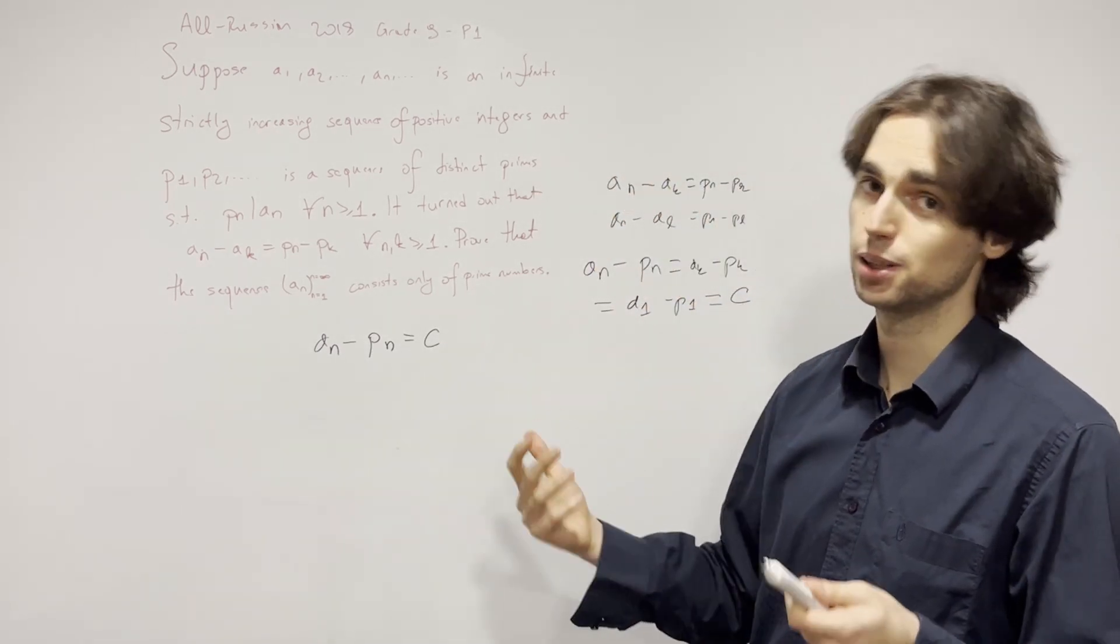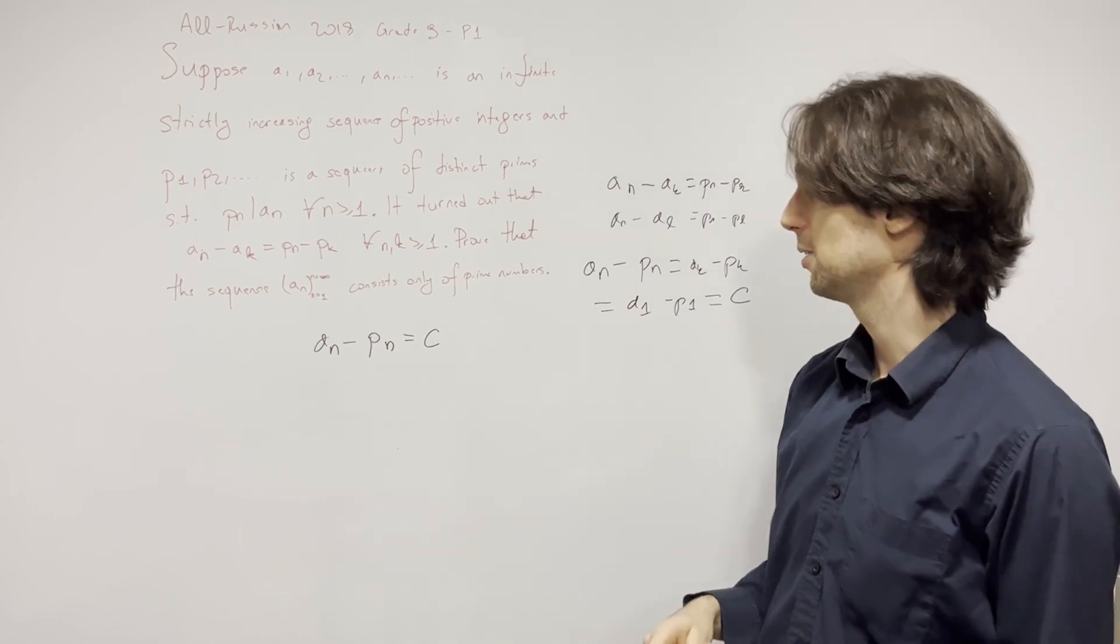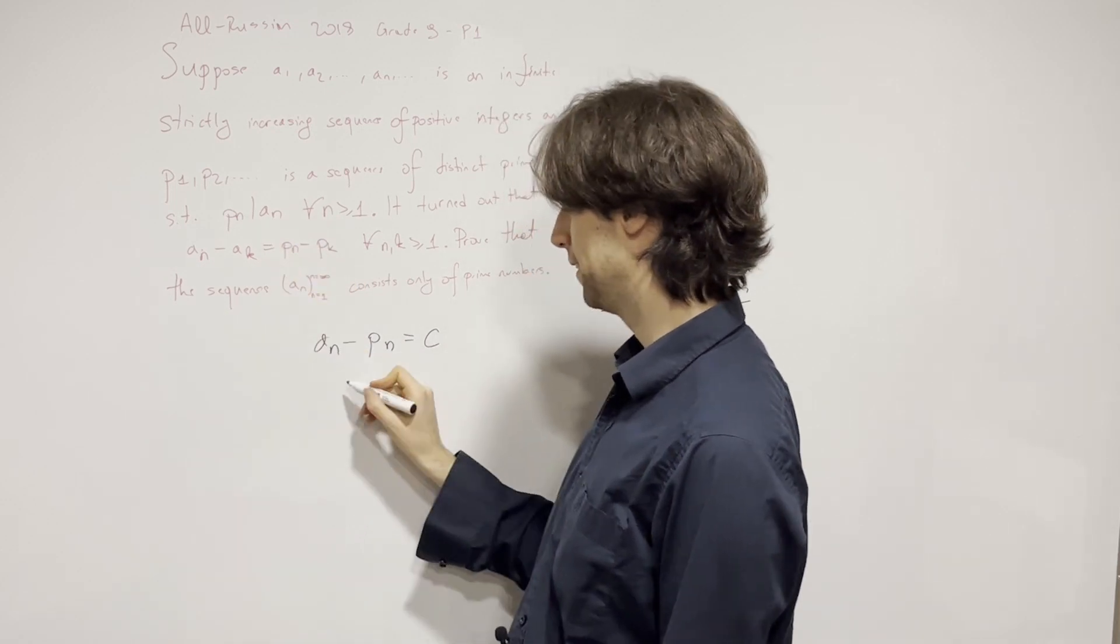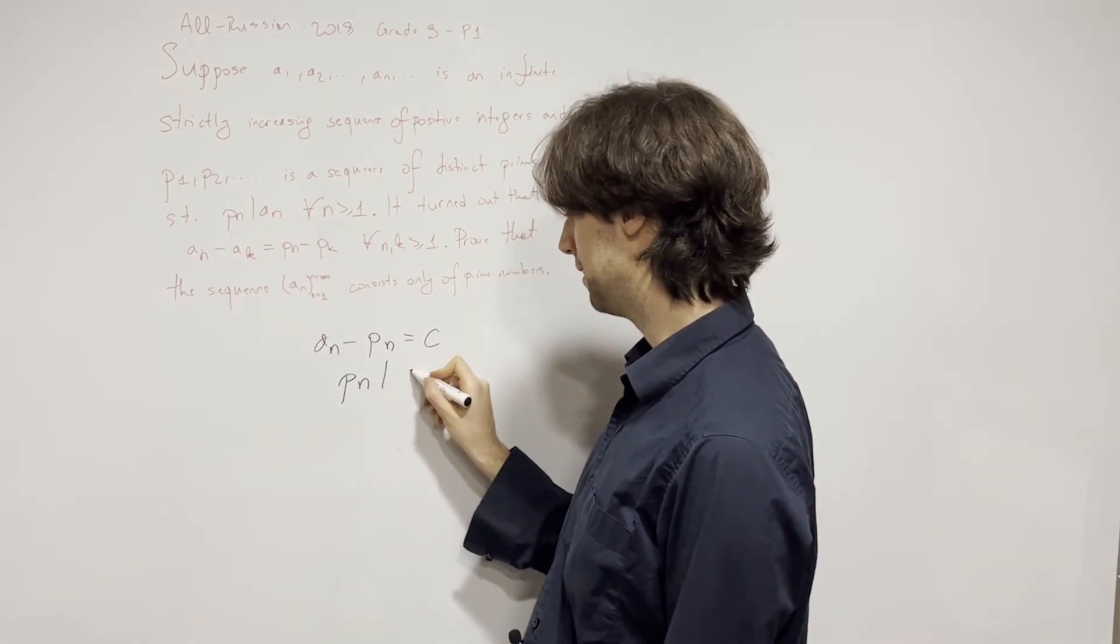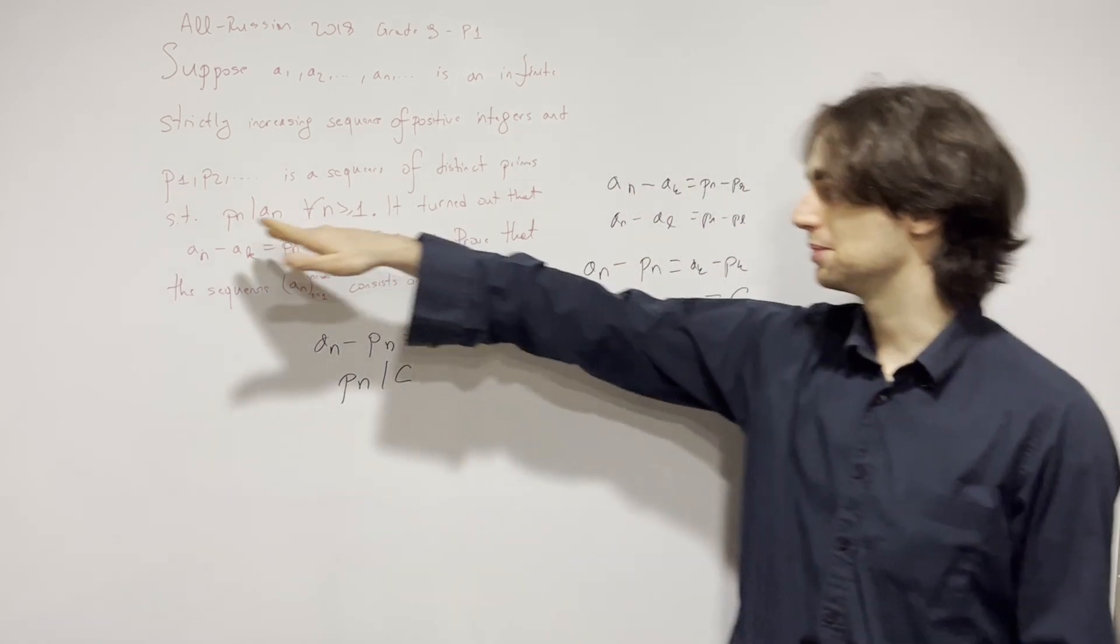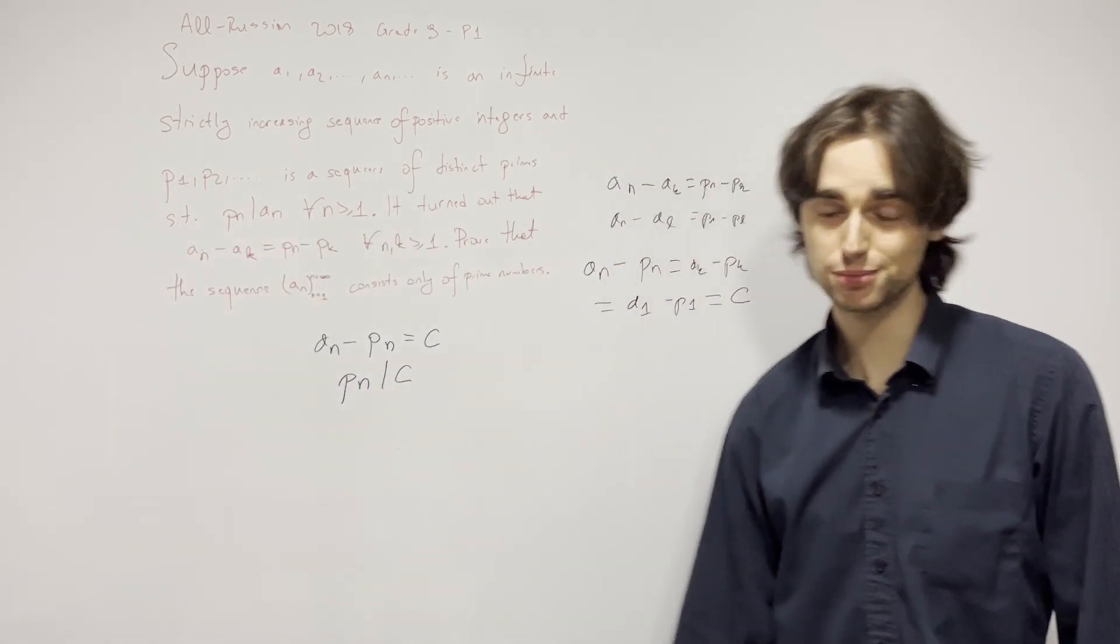Now can you pause for three minutes and try to finish the problem? Well, given that p_n divides a_n, this means that p_n divides that constant for every prime that's a member of the sequence.